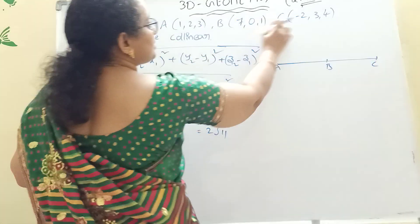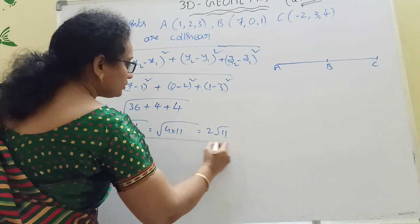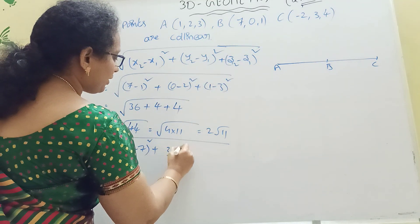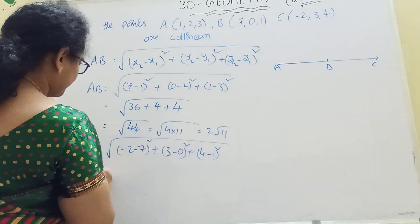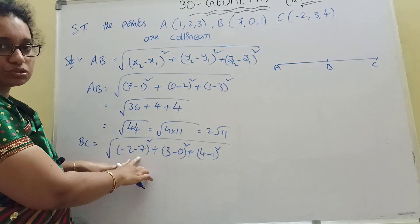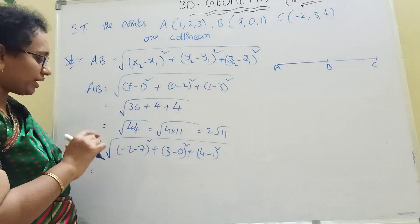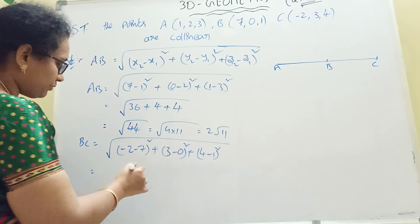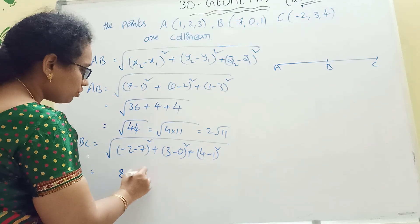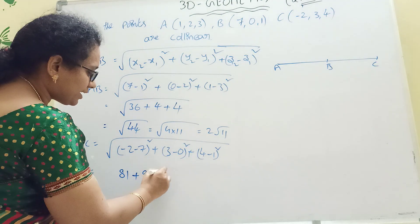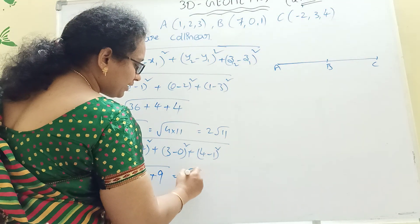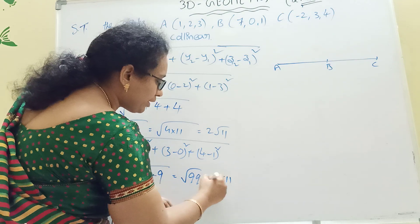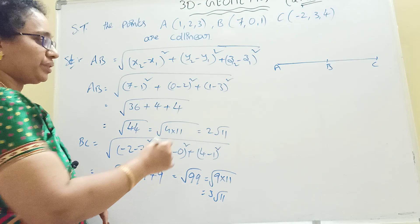Next, BC. LBC: minus 2 minus 7 whole square, plus (3 minus 0) whole square, plus (4 minus 1) whole square. That gives: (-9) squared is 81, plus 3 squared is 9, plus 3 squared is 9. Root of 81 plus 9 plus 9 equals root of 99, which is root 9 into 11, so 3 root 11.